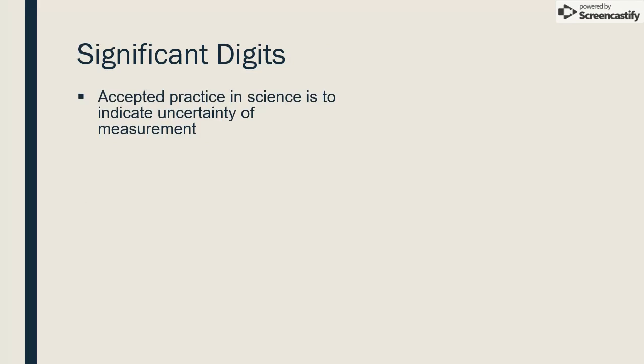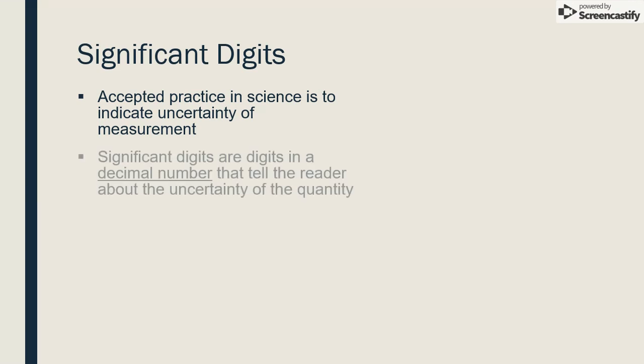When recording a measurement, the digits that are given tell the reader about the precision, or rather the uncertainty, of the measurement. Significant digits are digits in a decimal number that tell the reader the uncertainty of the quantity. Suppose a bolt is measured to be 3.5 inches long. Recording 3.5 tells the reader that we're only certain of the accuracy of our measurement to the nearest tenth of an inch, and our tool didn't allow for a tighter measurement.